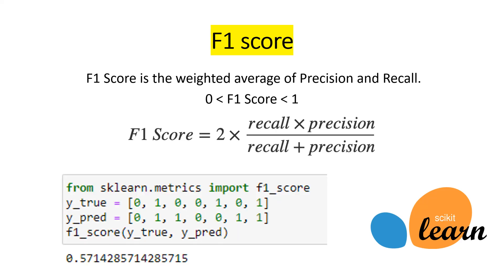Now we have the F1 score, one of the complementary metrics. The F1 score is the weighted average of precision and recall, always between zero and one. It equals two times recall times precision divided by the sum of recall and precision. It is also available in scikit-learn by importing the F1 score.